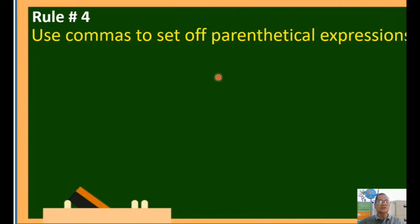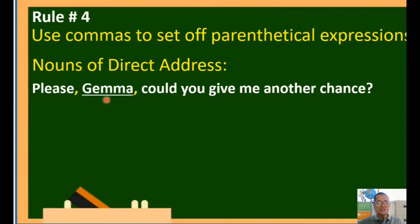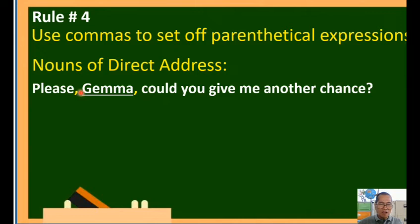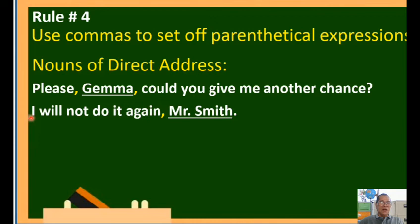Rule number four: use commas to set off parenthetical expressions. For nouns of direct address: 'Please, Jemma, could you give me another chance?' The sentence itself is 'Please, could you give me another chance?' and 'Jemma' is an inserted parenthetical noun. Place a comma after 'please,' then 'Jemma,' then another comma before continuing the sentence. Another example: 'I will not do it again, Mr. Smith.' Before 'Mr. Smith,' place a comma and then a space.